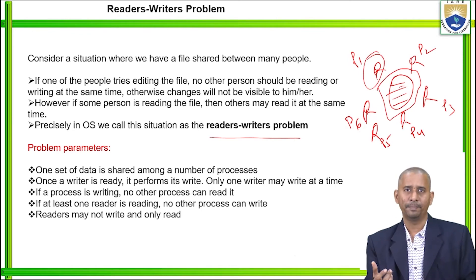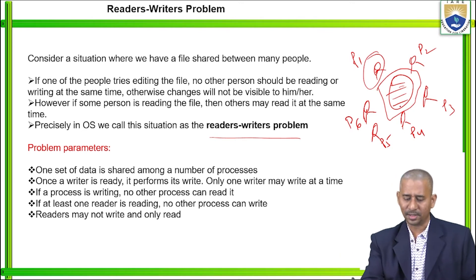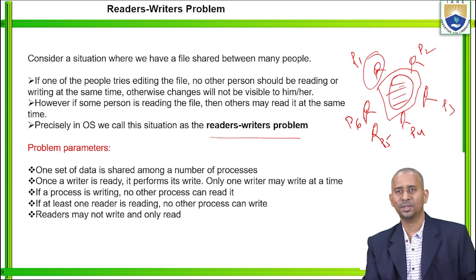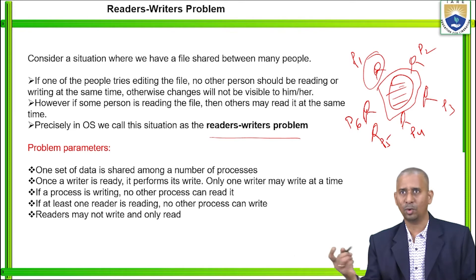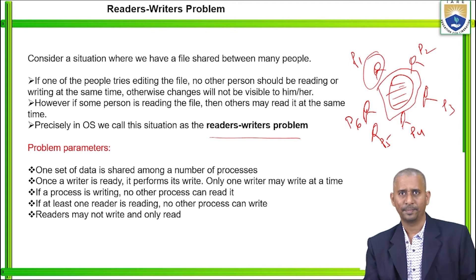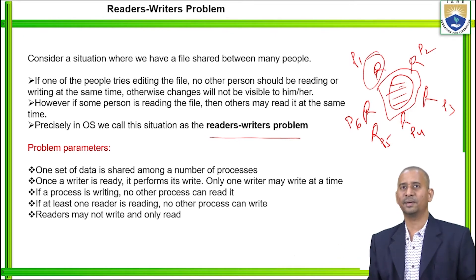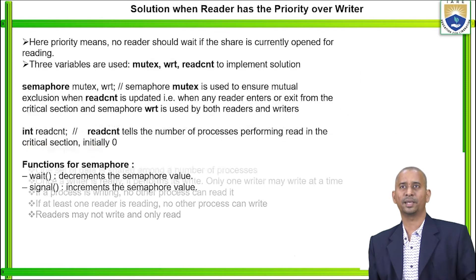Further parameters: if at least one reader is reading, no other process can write — there is no chance to modify the particular file. Readers may not write and can only read, meaning some access rights are limited to readers. These are the various problem parameters related to the readers-writers problem.